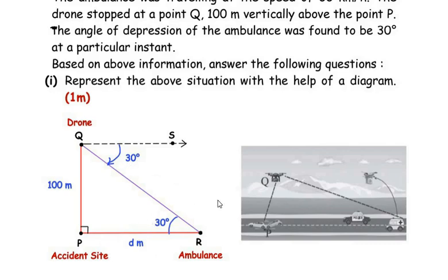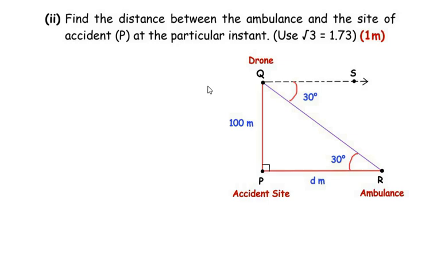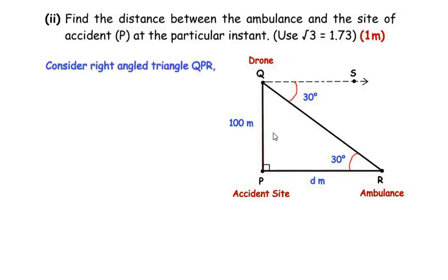Now let us move on to the next question: find the distance between the ambulance and the site of accident, that is point P, at the particular instant. Use the value of square root of 3 as 1.73. Using the diagram from part 1, we need to find the distance PR. We consider right-angled triangle QPR. The angle at R is 30 degrees, so the side opposite to 30 degrees is PQ — this is the opposite side — and the side opposite to 90 degrees is QR, which is the hypotenuse.